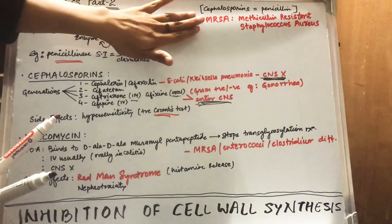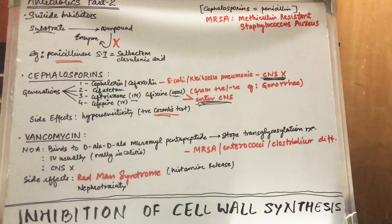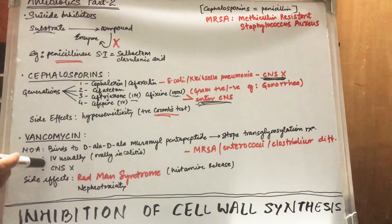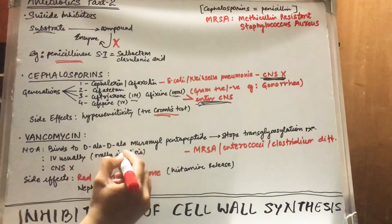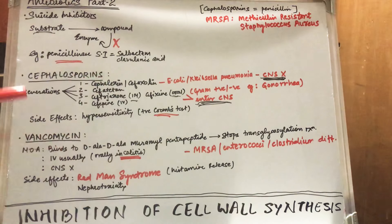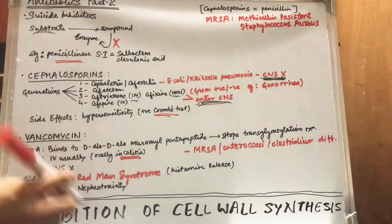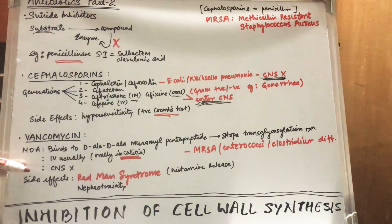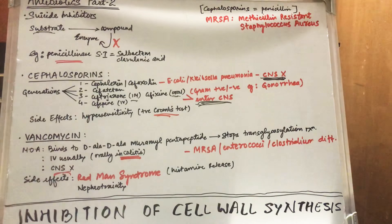The full form of MRSA is methicillin-resistant Staphylococcus aureus — you need to memorize this. Vancomycin is usually given intravenously, except in one case: colitis. In the case of colitis — colon inflammation or colon infection — you give it in oral form. Vancomycin cannot enter the central nervous system.